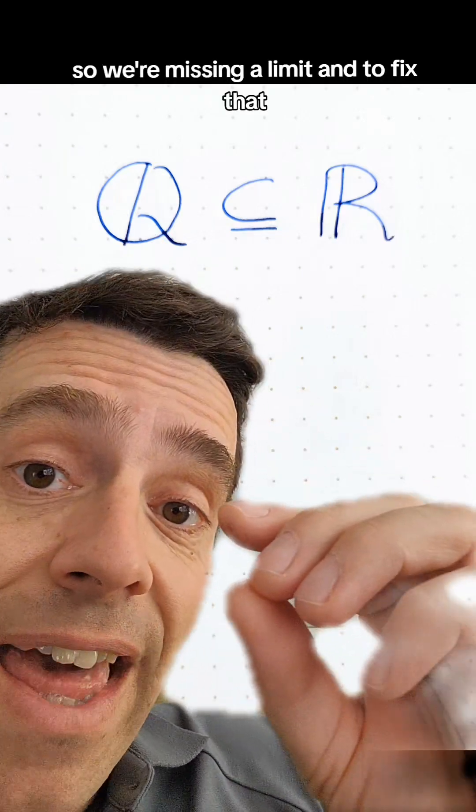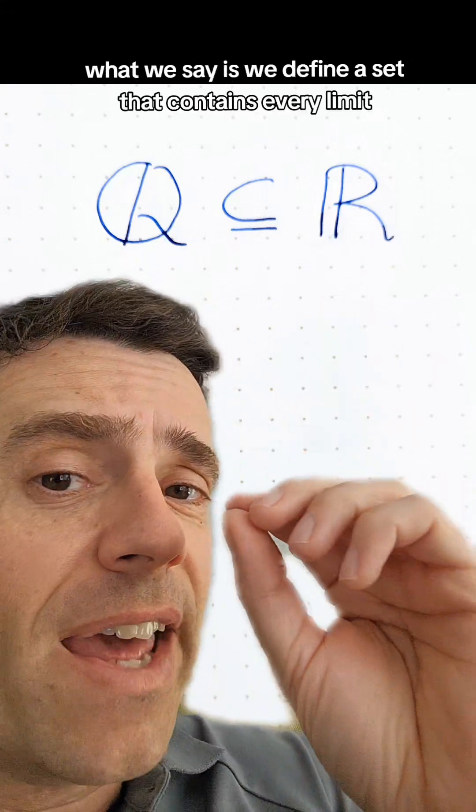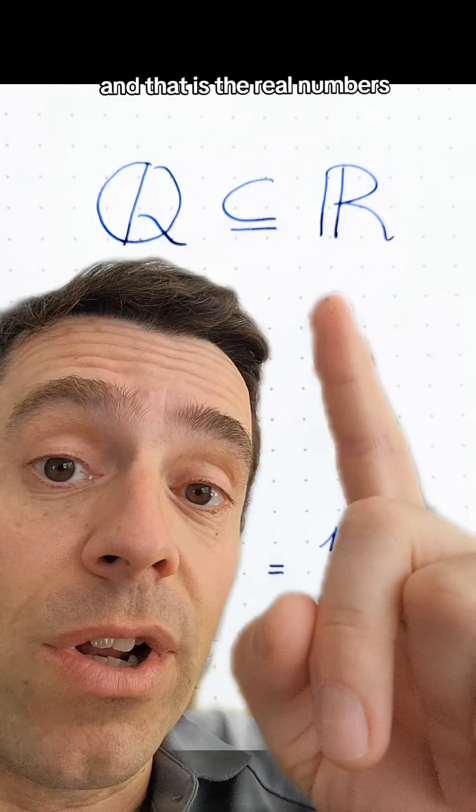And to fix that, what we say is we define a set that contains every limit of convergent sequences of rational numbers, and that is the real numbers.